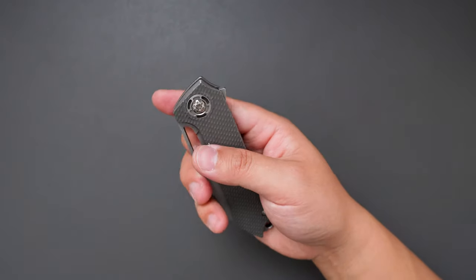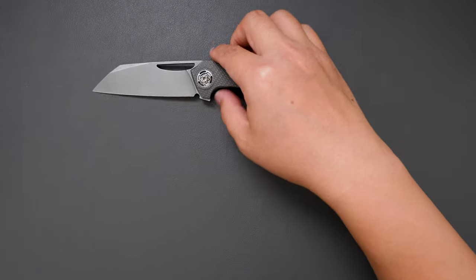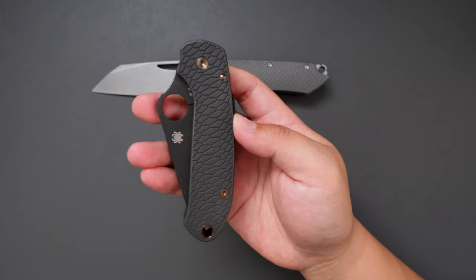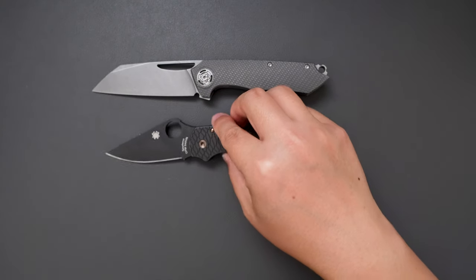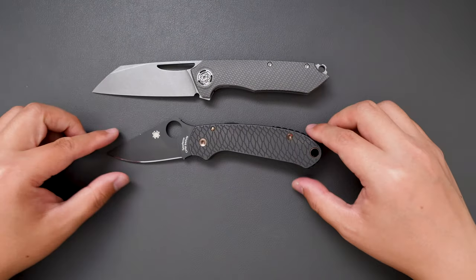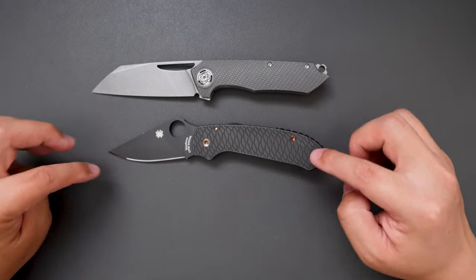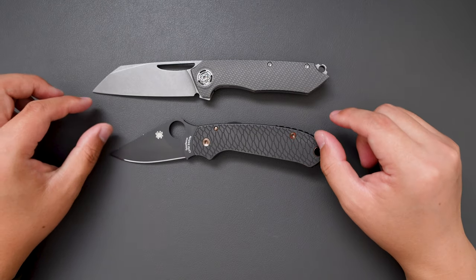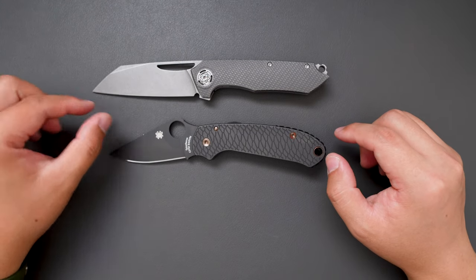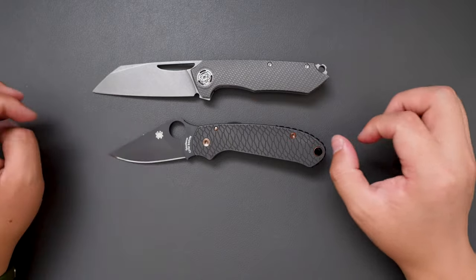Let's do some size comparison between this knife and my Spyderco Para 3. As you can see the Para 3 is a little bit shorter, both from the blade and the handle.